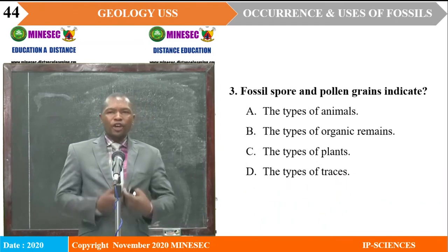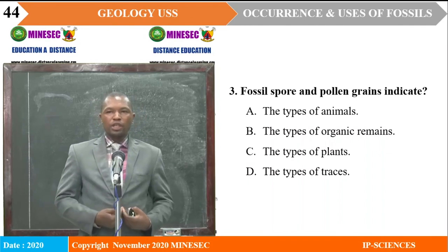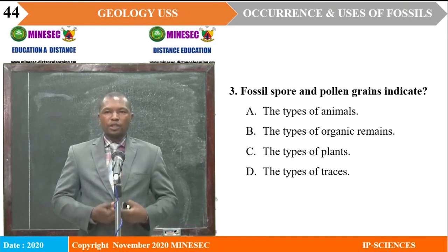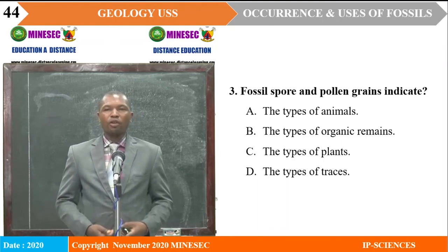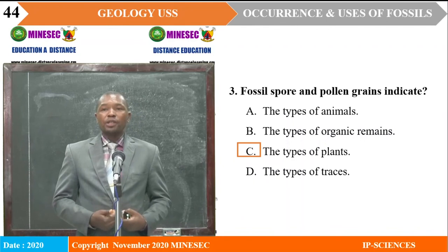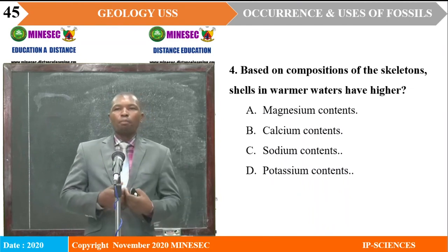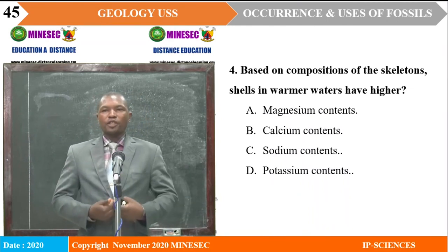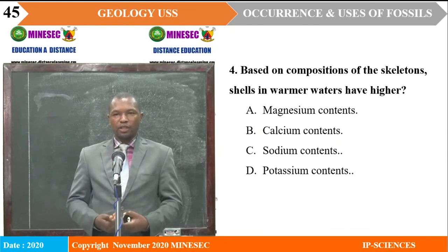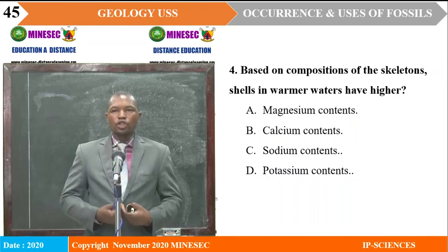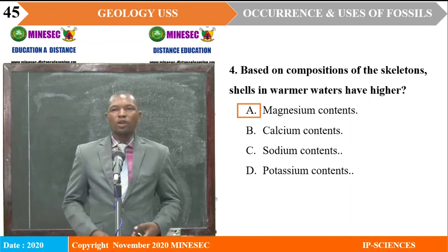Question 3: Fossil spores and pollen grains indicate — A: the type of animals; B: the type of organic remains; C: the type of plants; D: the types of traces. The correct answer is C — fossil pollen indicates the type of plants. Question 4: Based on compositions of skeletons, shells in warmer waters have higher — A: magnesium contents; B: calcium contents; C: sodium contents; D: potassium contents. The correct answer is A — they contain higher magnesium content.